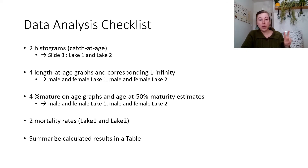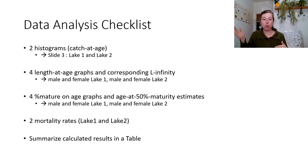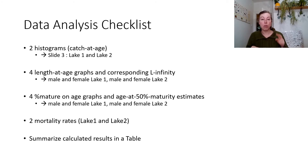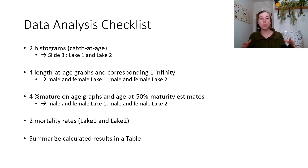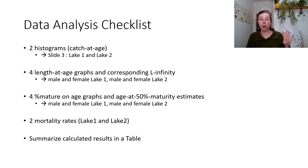So after you've done everything, you're going to have two histograms for lake one and lake two showing how old the fish were when we caught them — our age distribution. Then we're going to do four length at age graphs, finding out where L infinity is, done for the two different sexes because the size of males is quite different than the size of females at the two different habitats — lake one versus lake two, males and females in both. Same with our maturation rates — four graphs showing how males and females are maturing differently in those two populations. But for the mortality rates, we're going to combine the sexes, so it's just lake one and lake two.